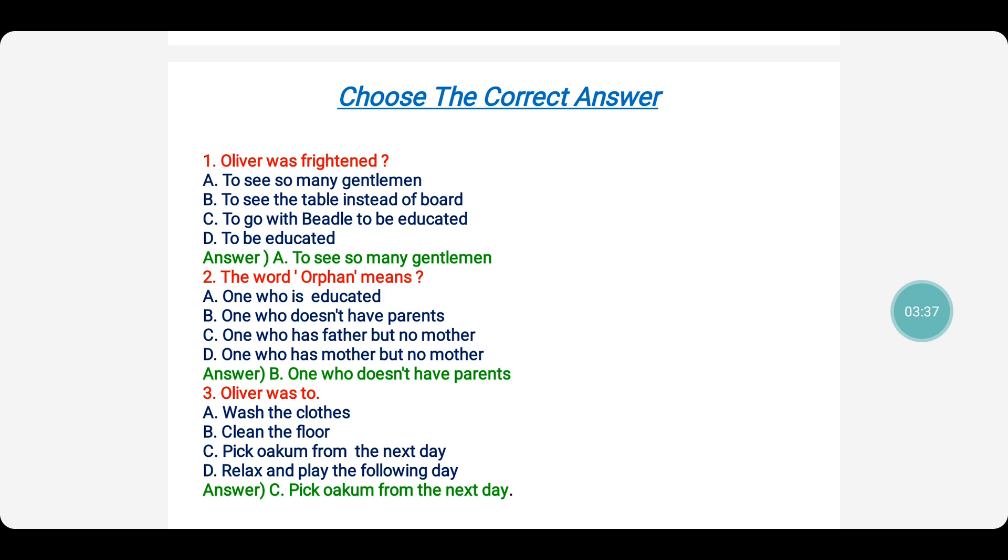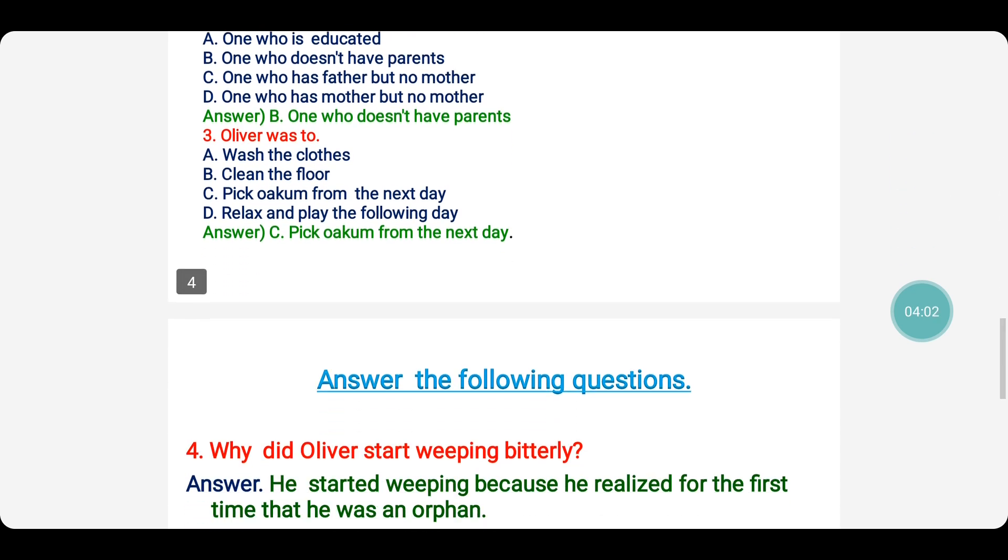On to the third question. Oliver was to, was to means was supposed to do something. What was that task that he was supposed to do? Wash the clothes, clean the floor, pick oakum the next day, relax and play the following day. We have a clear text over there telling that next day onwards he is supposed to pick oakum. So the right answer is pick oakum from the next day.